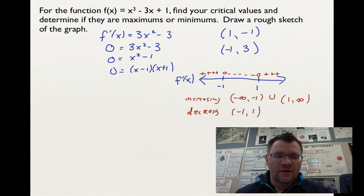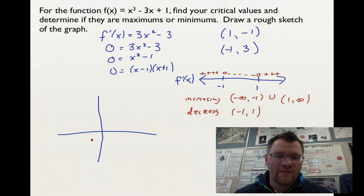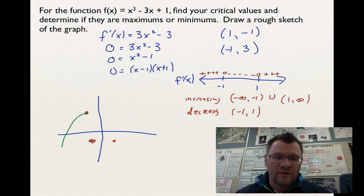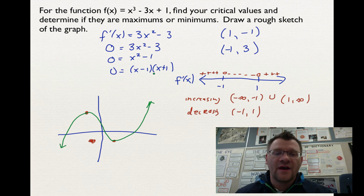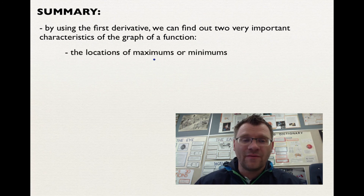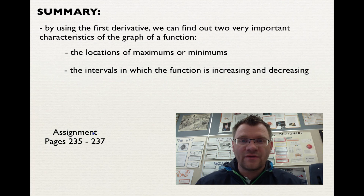Now we draw a rough sketch. We plot the points (1, −1) and (−1, 3). The function is increasing from negative infinity to −1, so it comes up to (−1, 3), then decreasing from −1 to 1, coming down to (1, −1), then increasing again from 1 to infinity. In summary, by using the first derivative we can find two important characteristics: the locations of maximums or minimums, and the intervals where the function is increasing or decreasing — very useful for sketching functions. Your assignment is on pages 235 to 237. Good luck, and we'll see you in class.